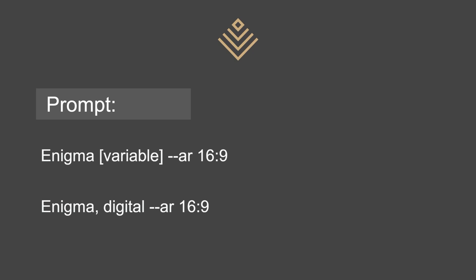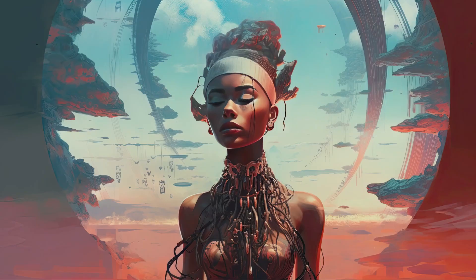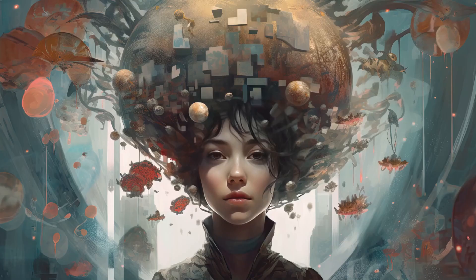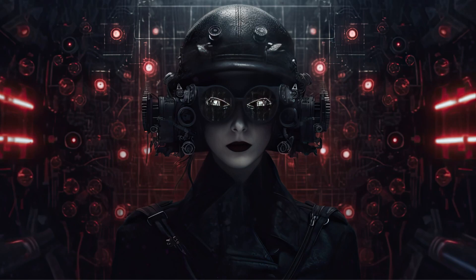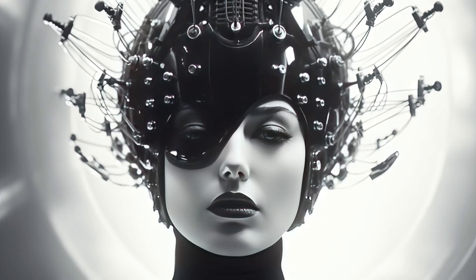If you don't use any aspect ratio, you just get a square image. The first variable I added is 'digital,' and this is what the digital ones look like — so 'enigma digital.' Next, I added 'techno noir' as the variable. Techno noir is not actually a style called techno noir, but I have found that I get better images using it. So this is actually one of my go-to things to throw at prompts, and here are the images for that.